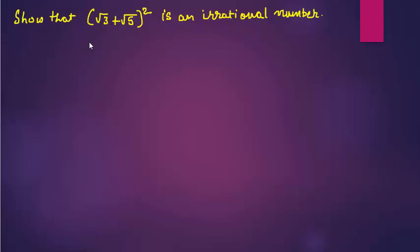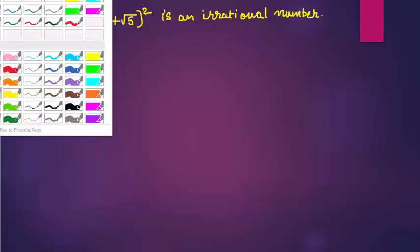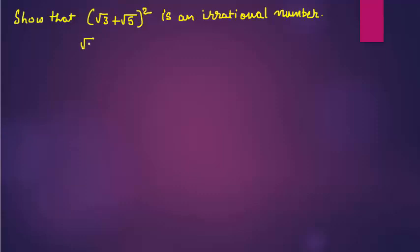We can directly solve this. How? We can use one identity: (a + b)². So (√3 + √5)² means a + b whole square will give you a² + 2ab + b².